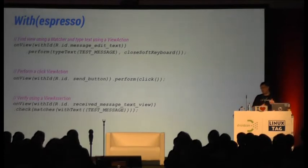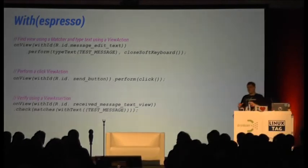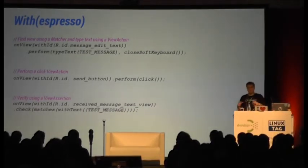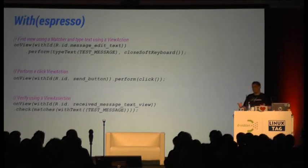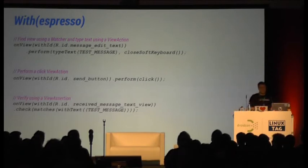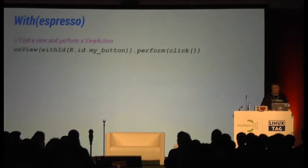That's three or four lines versus 20 or 30 lines before. Even more importantly, there's not much boilerplate code in it. You don't have to deal with activities, you don't have to deal with asynchronous things, you don't have to deal with synchronization. That's really the beauty of Espresso.